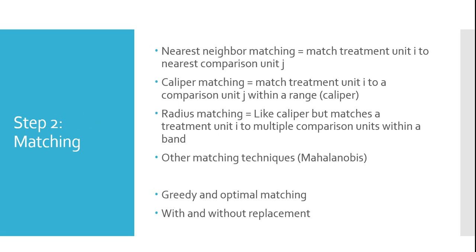Step two is matching. Within propensity score matching frameworks, there are a number of different ways to go about matching. Some of the more common ones are nearest neighbor matching, where you match two units that have the most similar propensity scores, and caliper or radius matching, where you define some distance on your propensity scores and match units within that band. There are also different process approaches: greedy versus optimal matching. In greedy matching, as soon as a match is made between two observations that match is kept, even if a better match could be found later in the data. In optimal matching, the algorithm is able to reconsider a match and perhaps match two units that have closer propensity scores. Additionally, matching can be done with or without replacement. With replacement, an observation can be matched more than one time — it's put back in the pool of possible matches — whereas without replacement means that once a match has been made, that observation is taken out and not able to be matched with other units.